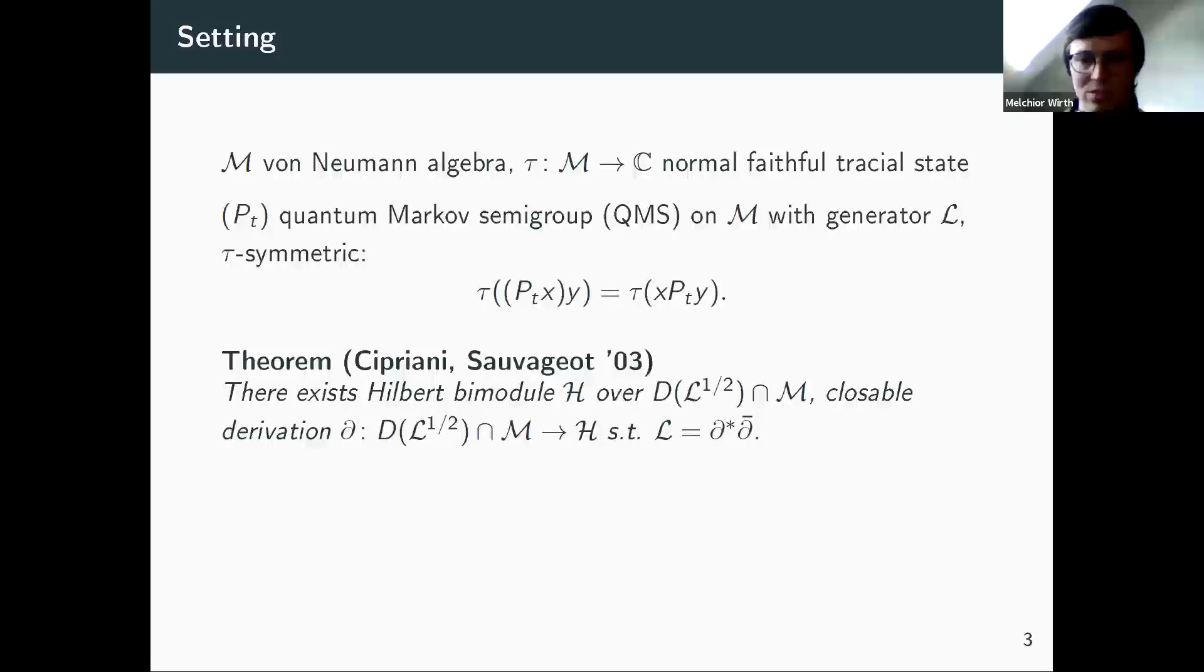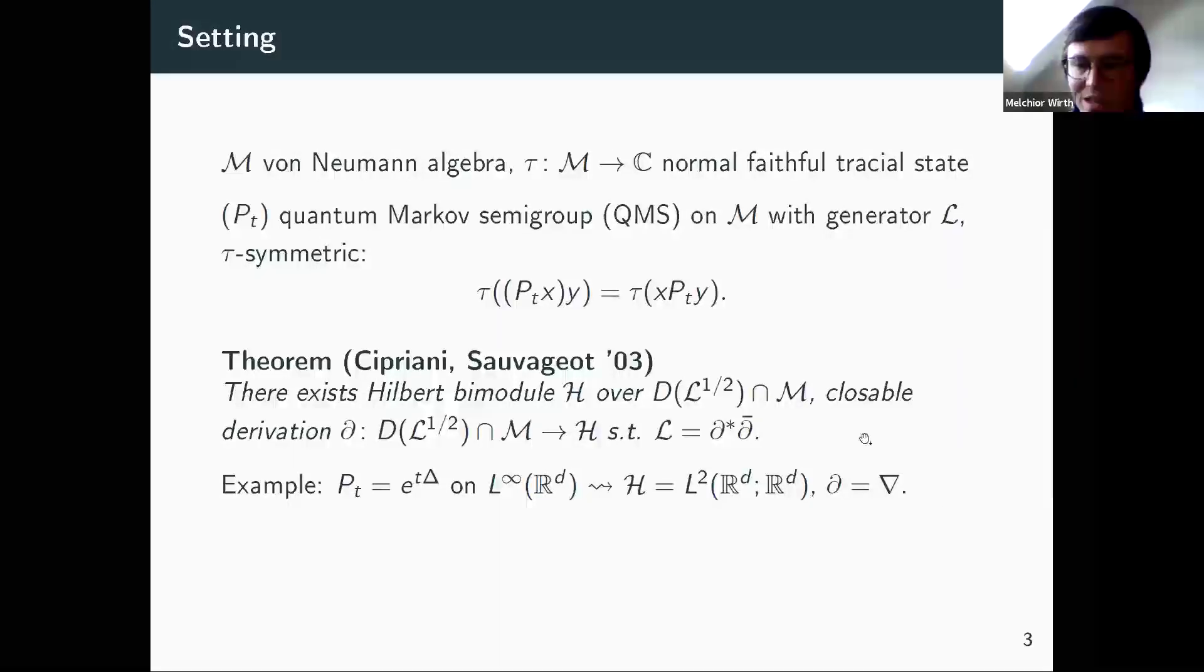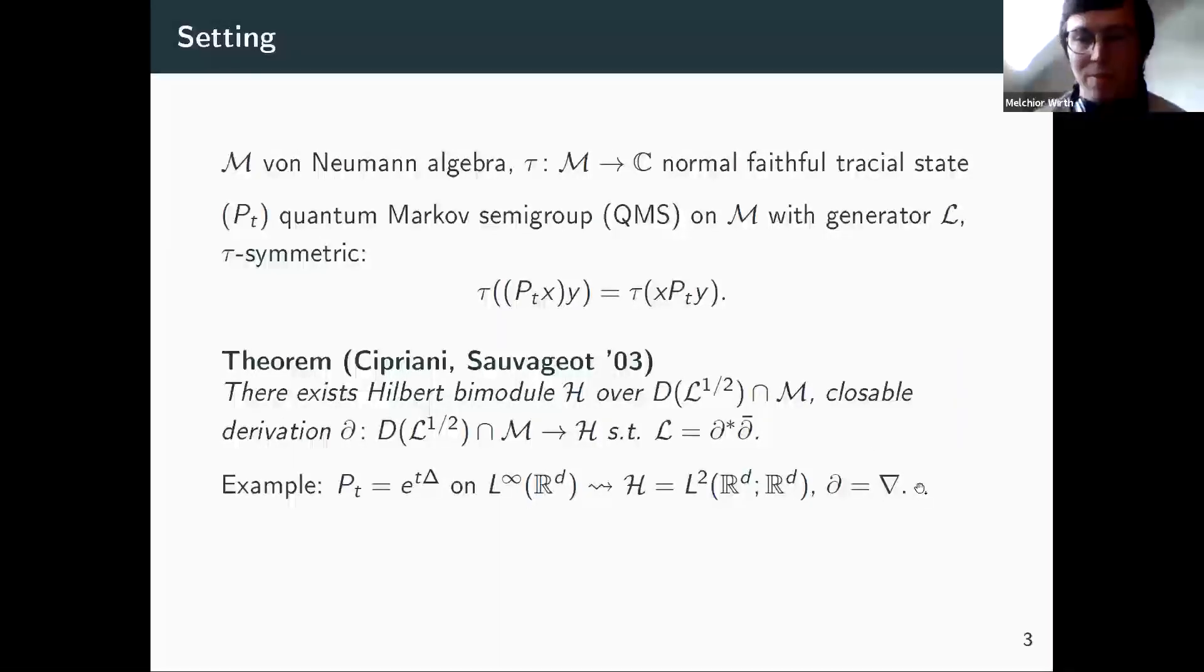Which means in particular that this P_t extends to a strongly continuous semigroup on all L^p spaces between 1 and infinity. And then, just as in Matthias's talk, we will use this result by Cipriani and Sauvageot, that in this case my generator, my L^2 generator of the QMS can be written as D*D, where D is a derivation. The simplest example, the one that corresponds to Otto's theorem: if I look at the heat semigroup on L^∞ or L^2 of R^d, then my H is exactly the space of tangent vector fields and my D is exactly the gradient operator.